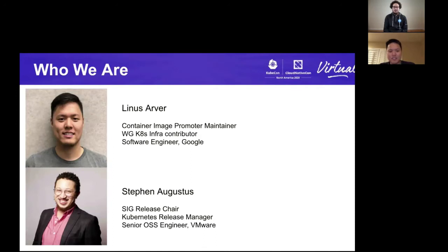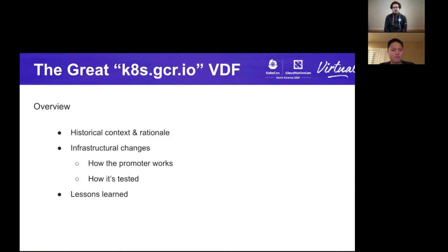And hello, my name is Linus Arbor. I'm a software engineer at Google. I am the main author of the container image promoter, which we'll be getting into more later today. I also contribute to the working group for K8s Infra. The image promoter was probably one of the biggest projects to happen recently in this group. So a quick overview of what we're going to be covering today: the historical context and the rationale for image promotion and the vanity domain flip overall, the infrastructure changes that are required, how the container image promoter works as well as how it's tested, and finally some lessons that we learned along the way.